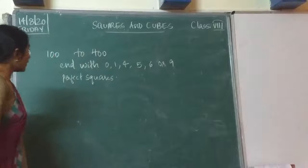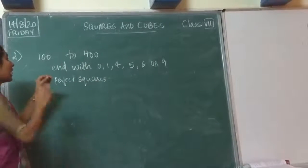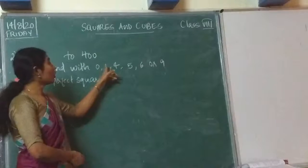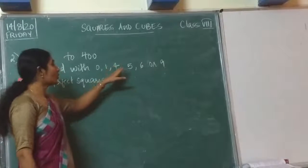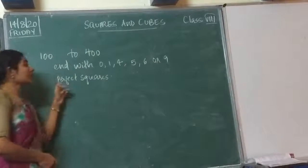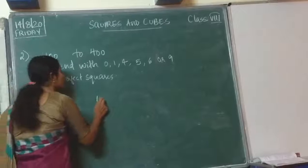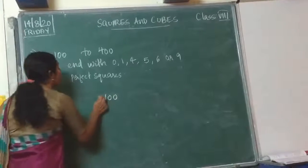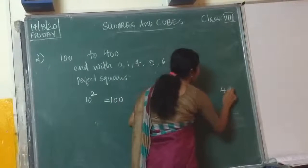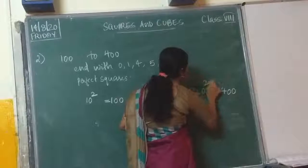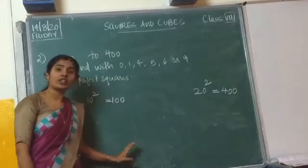Next question: You want to write all the perfect square numbers from 100 to 400 — those numbers whose last digit ends with 0, 1, 4, 5, 6, or 9. And those numbers will be a perfect square. So start from 100. You know 100 is a perfect square because 10 squared is 100, and 20 squared is 400. So between 10 and 20, all the squared numbers should be taken.